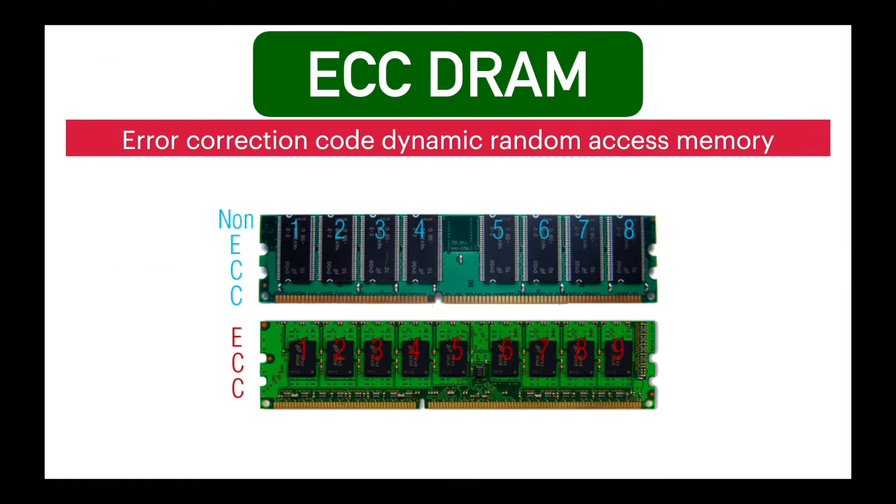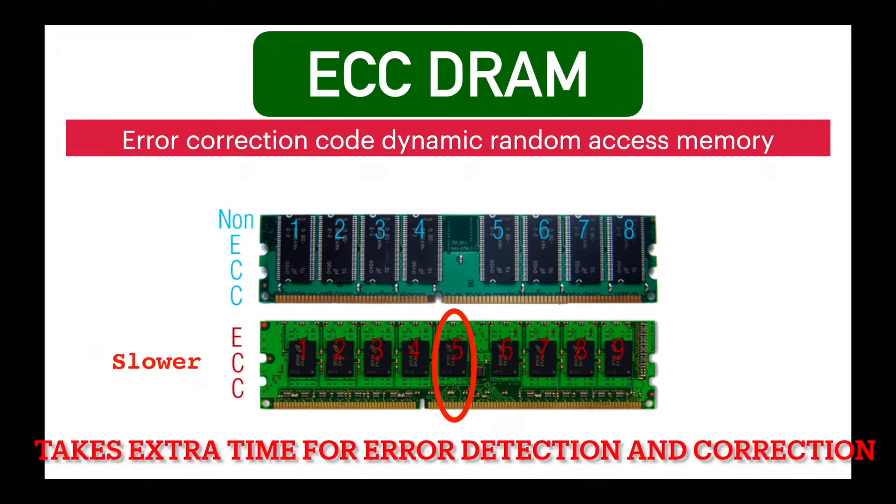Physically ECC memory differs from non-ECC memory, in that it has 9 memory chips instead of 8 chips. The extra 1 chip is to detect and correct error in 8 chips. ECC memory is slower than non-ECC memory as it takes extra time for error detection and correction.